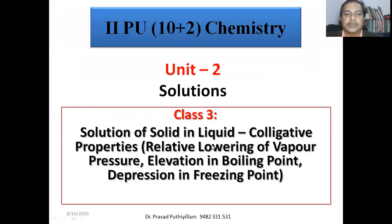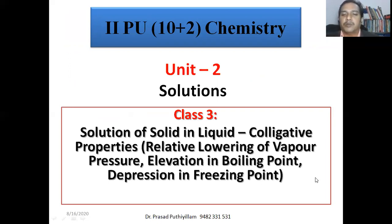This is class number 3 for 2nd PU plus 2 Chemistry, in which colligative properties are discussed: relative lowering of vapor pressure, elevation in boiling point, and depression in freezing point. One more colligative property — osmotic pressure, osmosis, reverse osmosis, and purification of water — will be discussed in class number 4. Thank you very much and have a nice day.